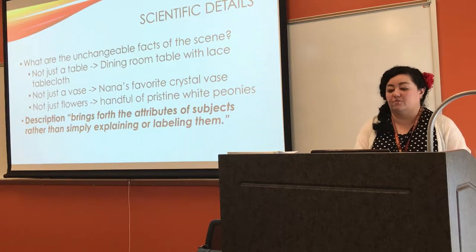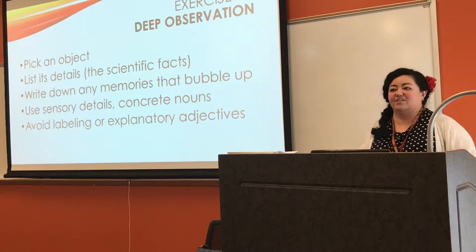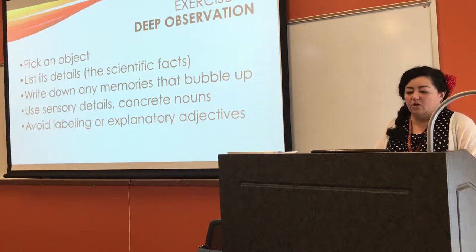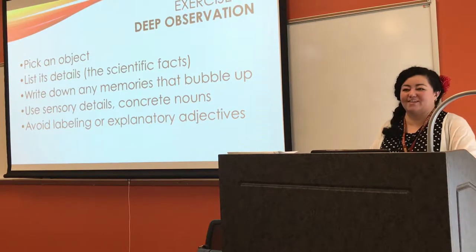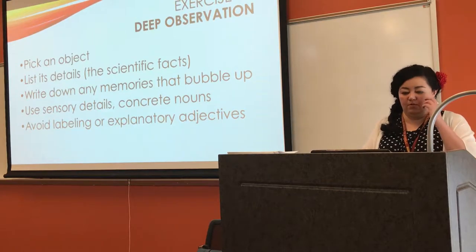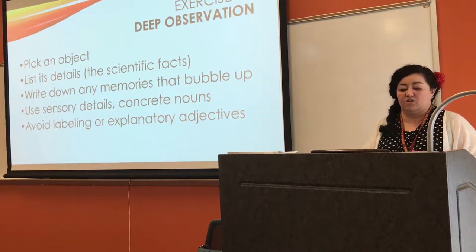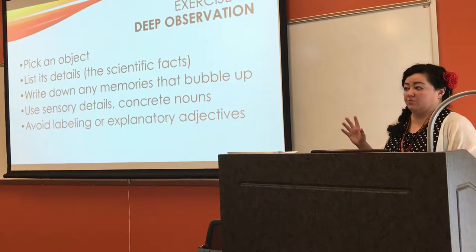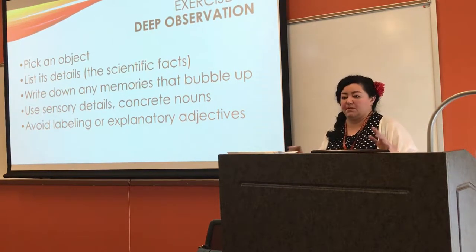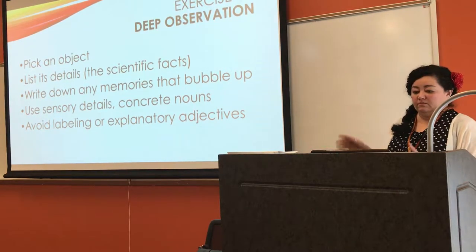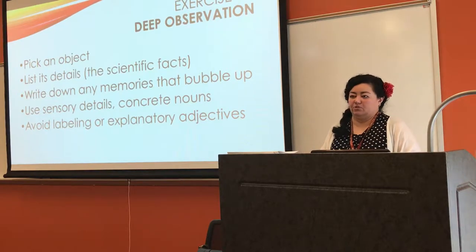We're getting into our first writing exercise. You're going to pick an object, list all the scientific facts of that object, then write down any memories that bubble up from it. Use sensory details — concrete nouns: it's orange, it's hard, it's squishy. Try to avoid labeling adjectives. Maybe something you've encountered today, something in this room. Write down scientific facts and memories you associate with it.